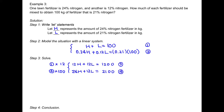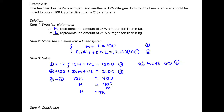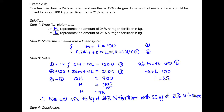Since both equations 3 and 4 have a positive 12L, we subtract to eliminate L, doing equation 4 minus equation 3 to get 12H equals 900. Dividing by 12 gives H equals 75. Substituting back into equation 1 gives L equals 25. Therefore, to make 100 kg of 21% nitrogen fertilizer, we mix 75 kg of 24% nitrogen fertilizer with 25 kg of 21% nitrogen fertilizer.